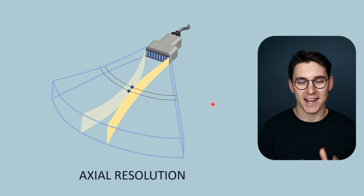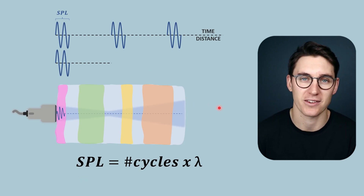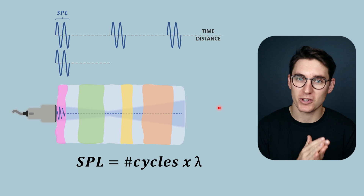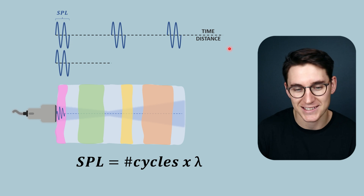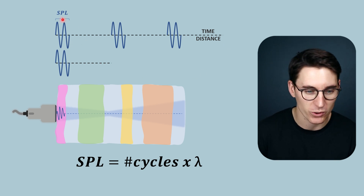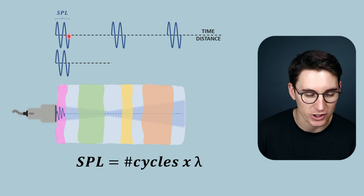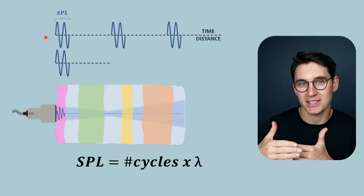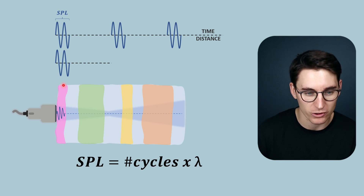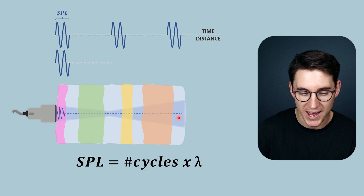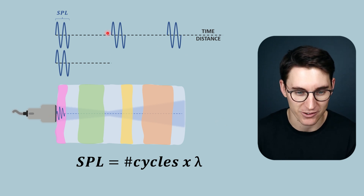In order to understand axial resolution we need to understand the concept of spatial pulse length. Casting our minds back to the pulse echo ultrasonography talk, we looked at the pulse echo wave as it heads into tissue. We saw there's a transmit time and a receive time. During the transmit time we are generating ultrasound pulses heading into the tissues, and this pulse travels through and returns during the receive time before the next pulse is released.